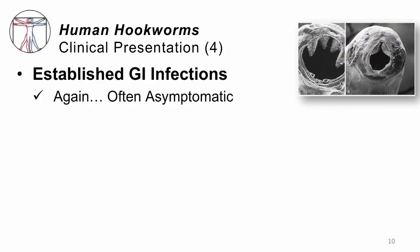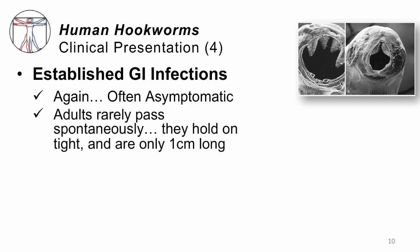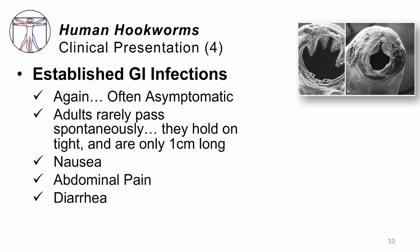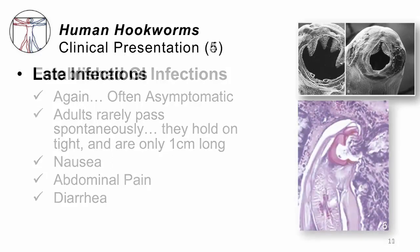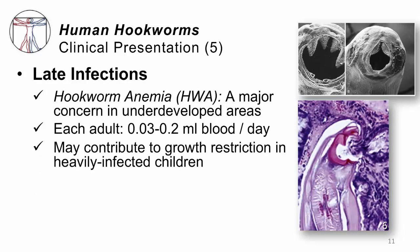Once they've made their way out of the lungs and into the intestines, we have an established GI infection. Just like with Ascaris, most people have no symptoms whatsoever. But unlike Ascaris, patients will rarely pass adult worms — they're so small, only a centimeter long, and they hold on for dear life. Usually if they do come to attention, it will be with a nonspecific GI syndrome of nausea, belly pain, and sometimes diarrhea. The key concern is the complication of hookworm anemia. Each adult worm sucks less than a cc of blood per day, but if you have a lot of worms over a long period of time in a small patient — a young child — this may contribute to growth restriction due to hookworm anemia, and it's one of the main reasons why this worm is so important from a public health perspective.